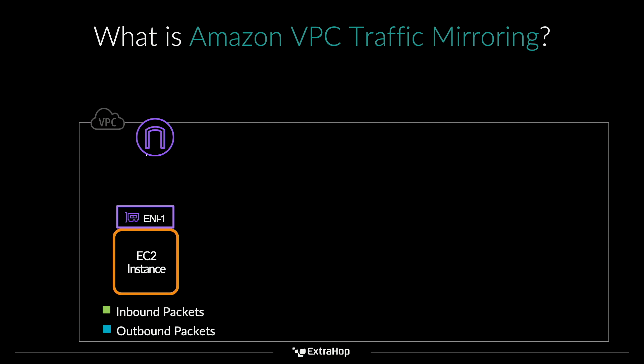Back in 2013, we launched our RP-CAP solution — we needed to deploy an agent to gather traffic. Now with the release of VPC traffic mirroring, it allows us to essentially have a virtual tap. In an on-prem environment we can tap the data center, and now in the cloud we're able to leverage a virtual tap.